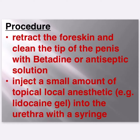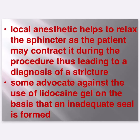Procedure: Retract the foreskin and clean the tip of the penis with Betadine or antiseptic solution. Inject a small amount of topical local anaesthetic, e.g. lidocaine gel, into the urethra. Local anaesthetic helps to relax the sphincter, as the patient may contract it during the procedure, which could lead to a false diagnosis of a stricture. Some advocate against the use of lidocaine gel on the basis that an inadequate seal is formed.